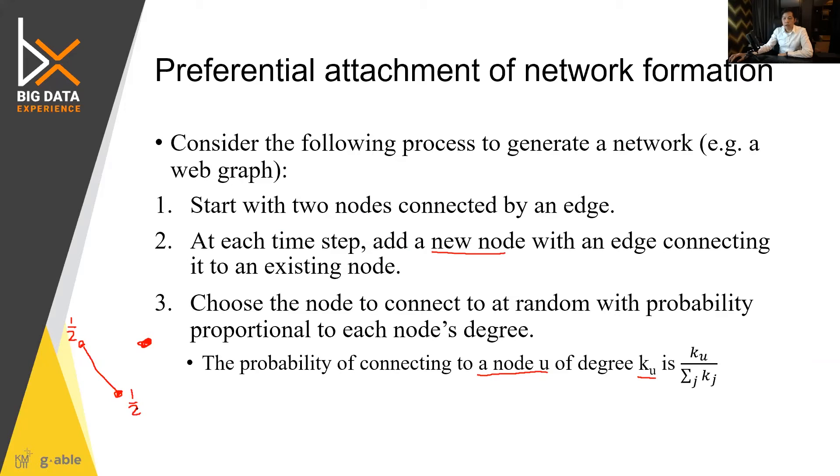That means if I were to select between them, it's just like random selection. So supposedly I select this and attach to this one. Now the probability would be updated.